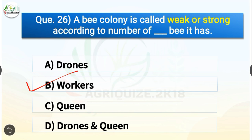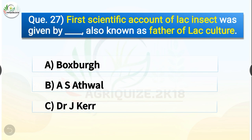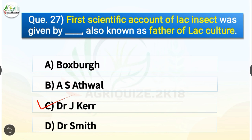Question number twenty-seven: First scientific account of lac insect was given by dash, also known as father of lac culture. The options are Boxberg, A.S. Atwal, Dr. J. Kerr, or Dr. Smith. The correct answer is option C — Dr. J. Kerr. First scientific account of lac insect was given by Dr. J. Kerr, also known as father of lac culture.